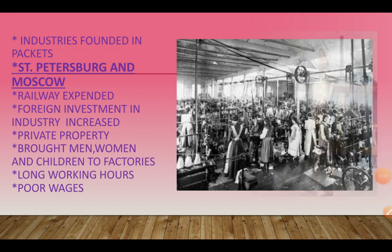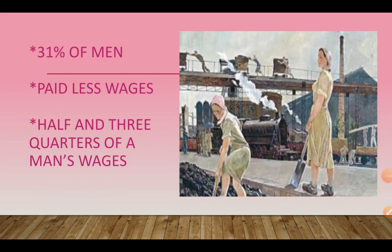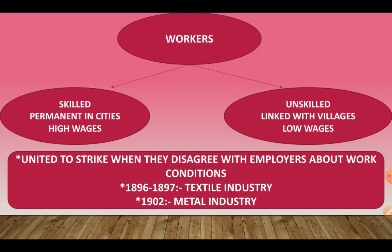Regarding wages — women made up 31% of all factory workers, but despite working the same hours and doing the same work, their wages were less than men's. Their wage was only half to three-quarters of any man's wages. Because of this, workers divided themselves into different social groups, and these social groups later played a big role in the revolution.